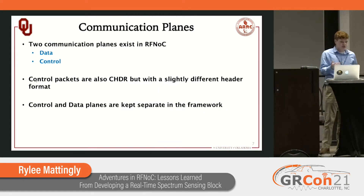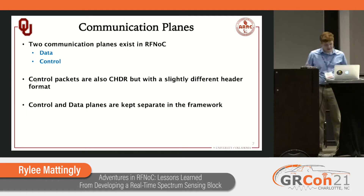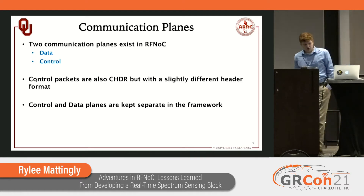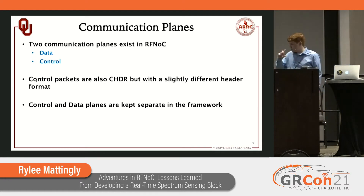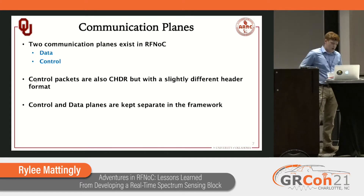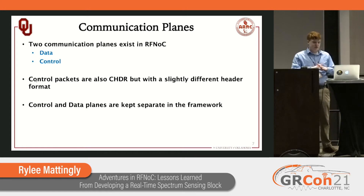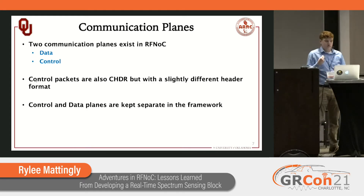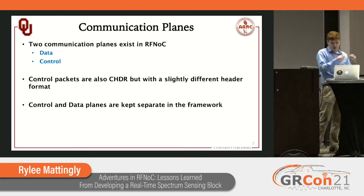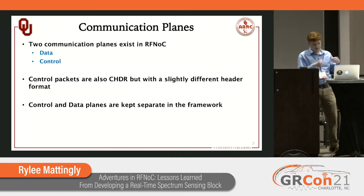There are two communication planes in RF-NoC: a data plane and a control plane. The control packets are also CHDR — they have a slightly different header format. The control and data planes are kept completely separate in the framework, and they're optional for each block.